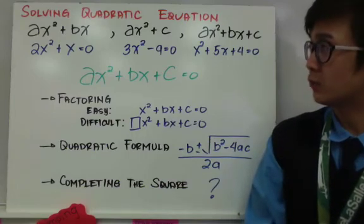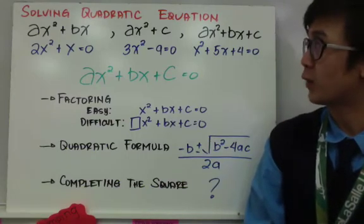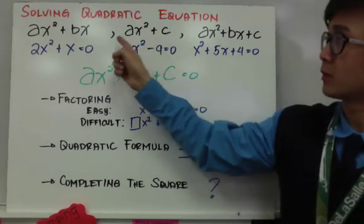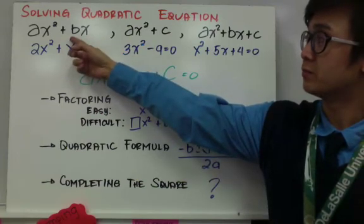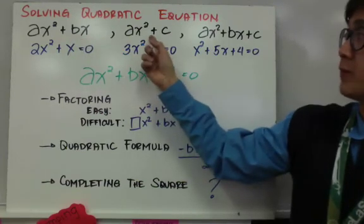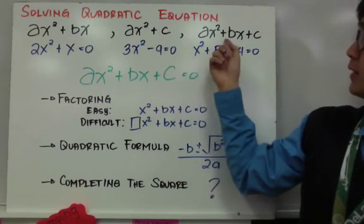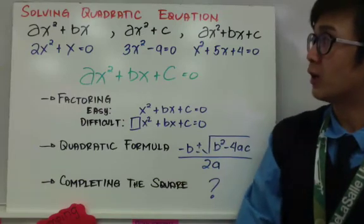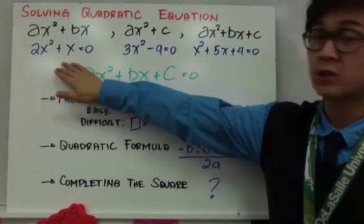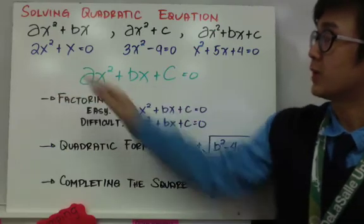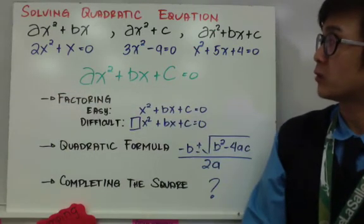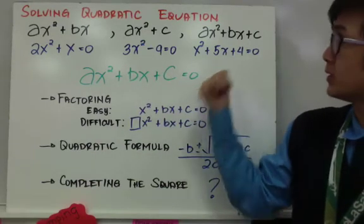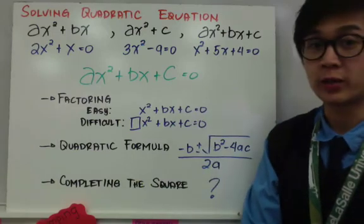In the past we've dealt with quadratic equations of different forms. We have a missing linear term, a missing constant, or a complete set. An example with a missing constant is 2x squared plus x equals 0. A missing linear term example is 3x squared minus 9. And a complete set example is x squared plus 5x plus 4 equals 0.